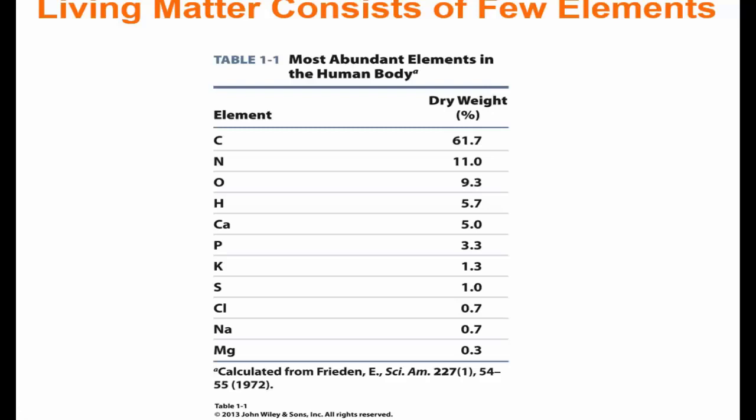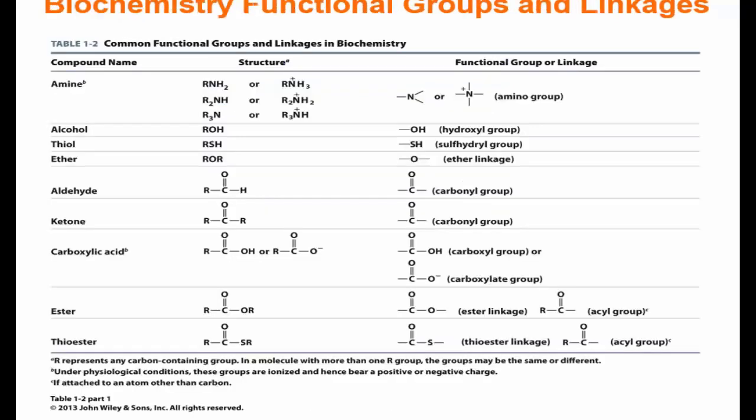The bulk of organic material required for life only utilizes 11% of the naturally occurring elements in the periodic table. Most of that material is made up of carbon, nitrogen, oxygen, hydrogen, calcium, and phosphate, with smaller amounts of potassium, sulfur, chloride, sodium, and magnesium. How these elements are bound together creates functional groups and gives a molecule certain physical properties such as polarity, formal charge, hydrogen bond donating capabilities, hydrogen bond accepting capabilities, or electron donating or withdrawing properties.